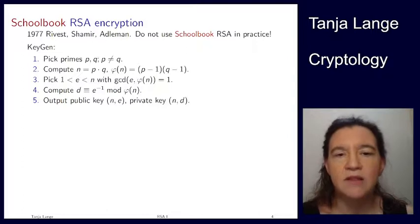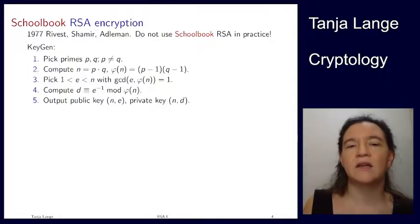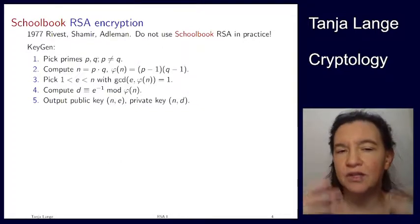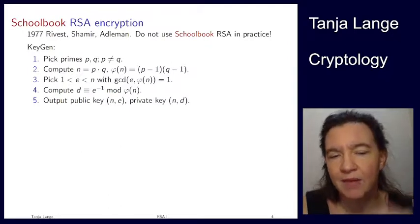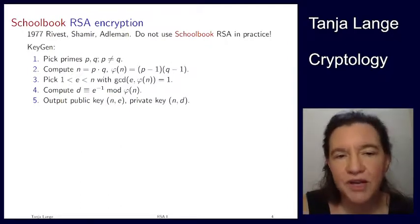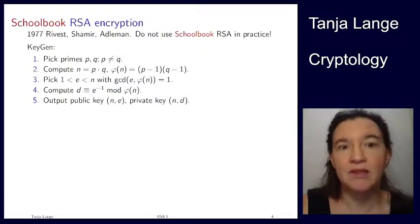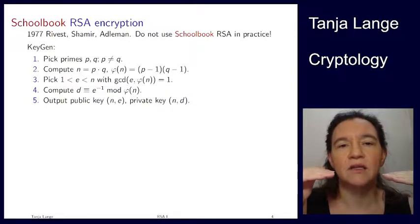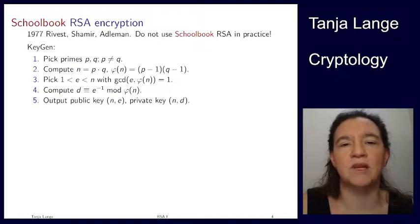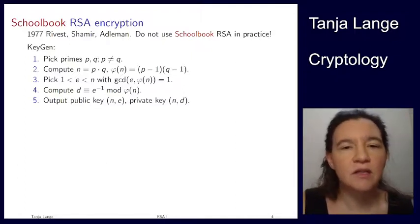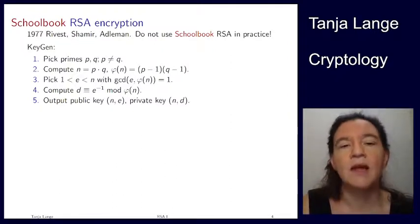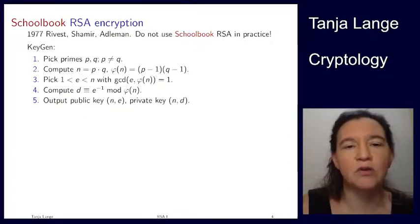The next part is computing d, the inverse of e modulo phi(n). Using a tool like Sage this is easy; by hand you'd use the extended Euclidean algorithm — a polynomial time algorithm, but more computation-intensive. Then you're done. The biggest step is really step one: picking primes. If you've ever generated a PGP key on a laptop with an SSD rather than a hard drive, it will sit there asking for more randomness — that's because finding a prime requires lots of random choices. We'll see later how to determine whether a number is prime.